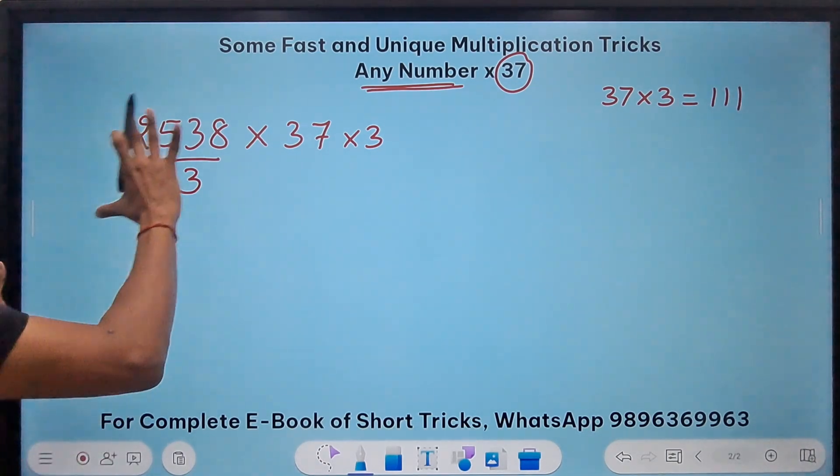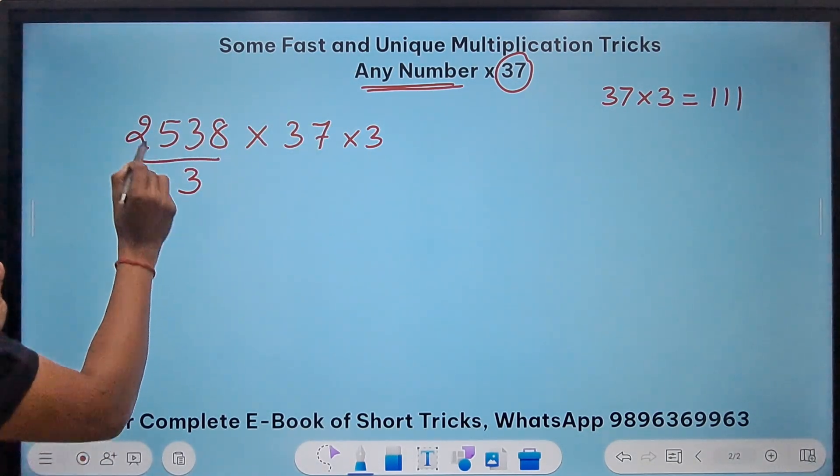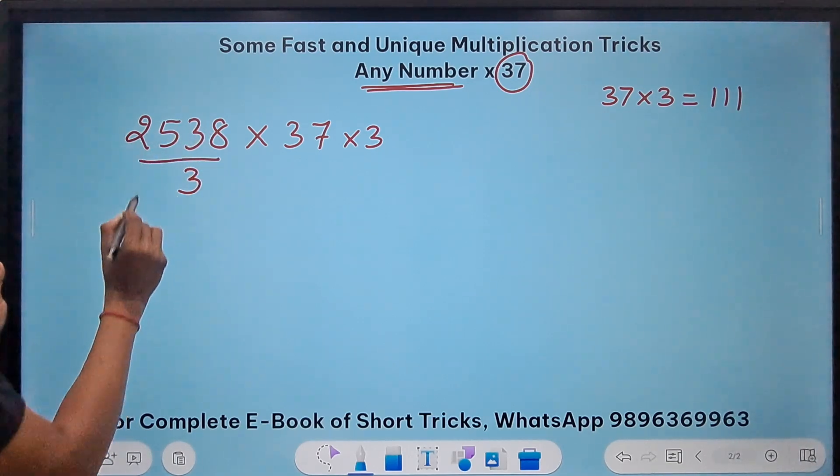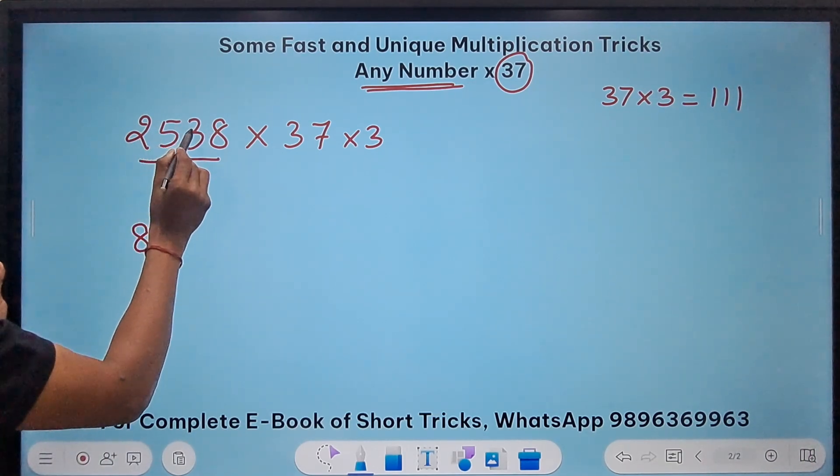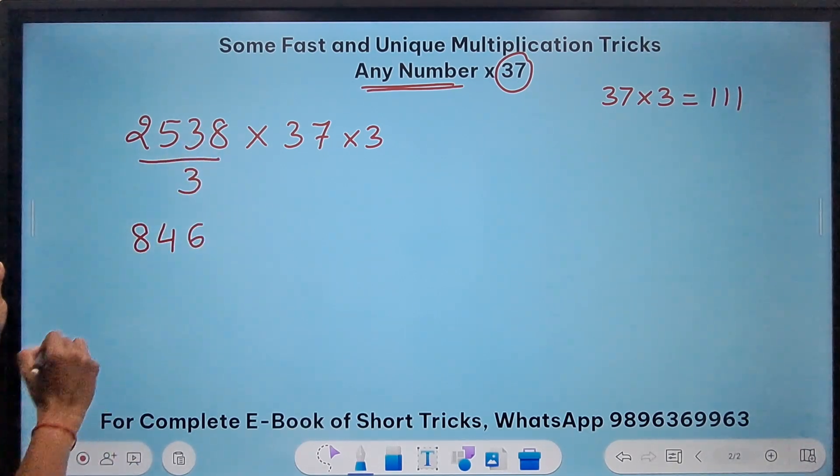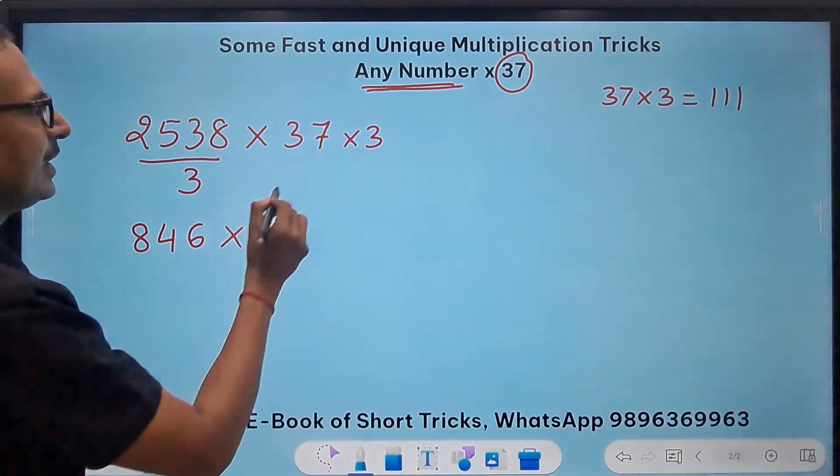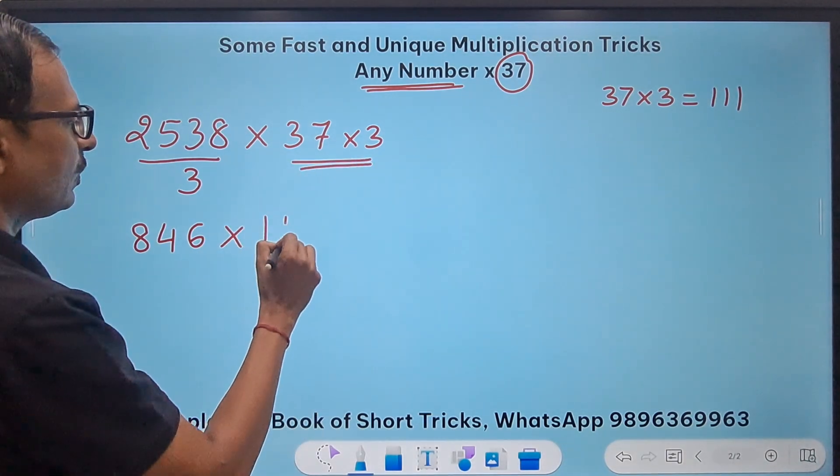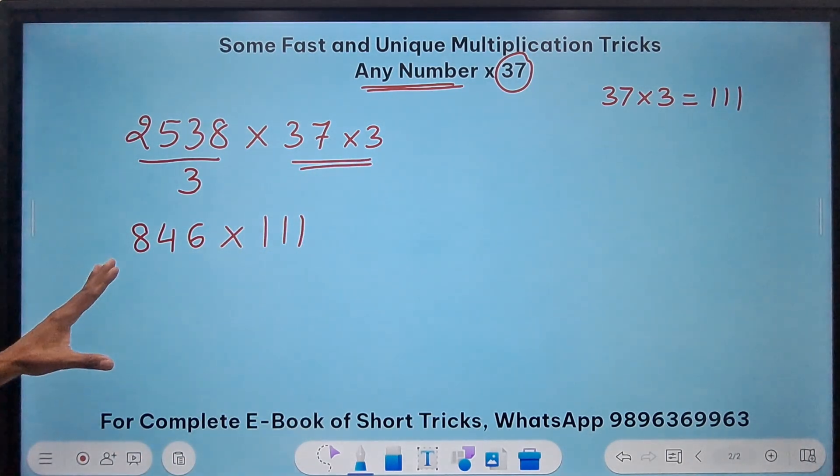But it helps me in one way. If I divide, 2538 by 3, this is 3, 8's are 24 so 13 means 3, 4's are 12 and 846 right, 846 and then this product becomes triple 1 and multiplication by 1's is not a difficult job.